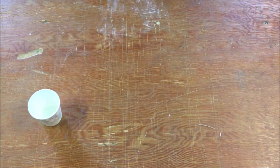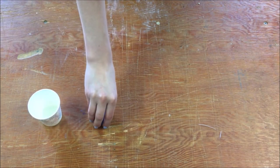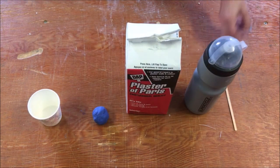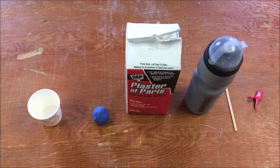To make your fossil you will need a paper cup, modeling clay, plaster of Paris, water, a stir stick, and a small plastic toy of your choice such as a bug or a dinosaur.